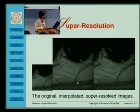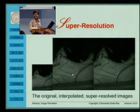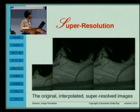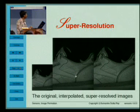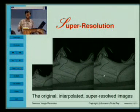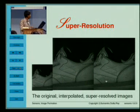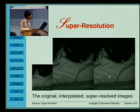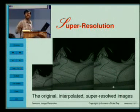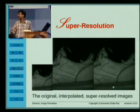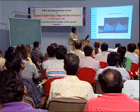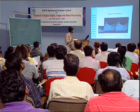This is an original image. This is an image with simple bilinear interpolation. This is a super resolved image. Note that you can see the details of the stitches now. I will just explain the signal processing problem — give a brief introduction to the theory.